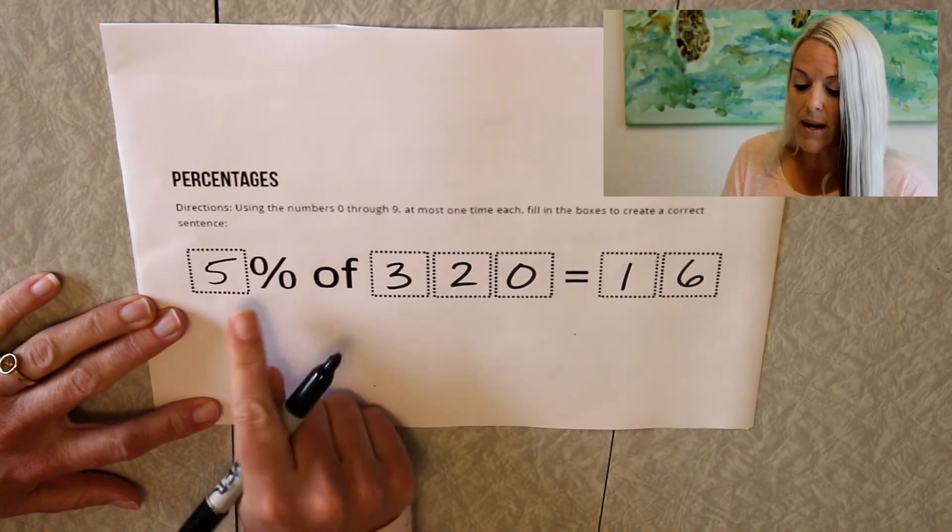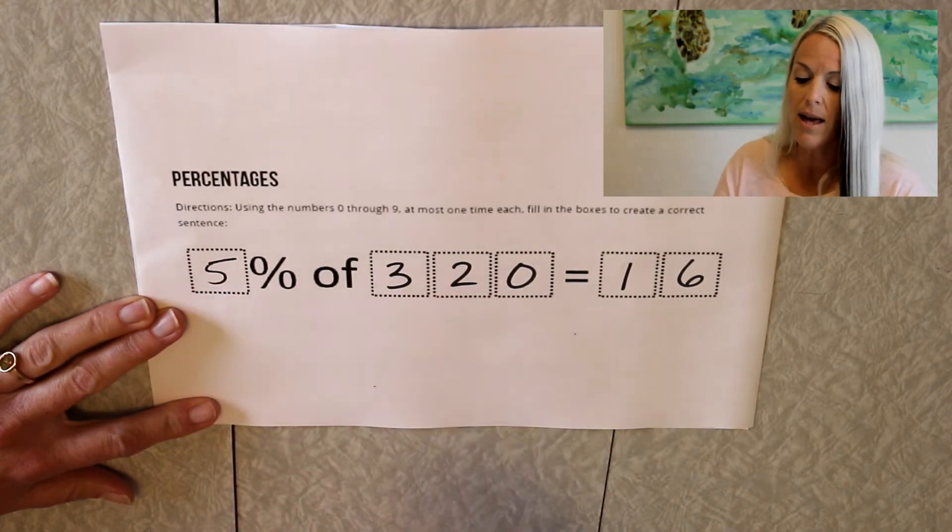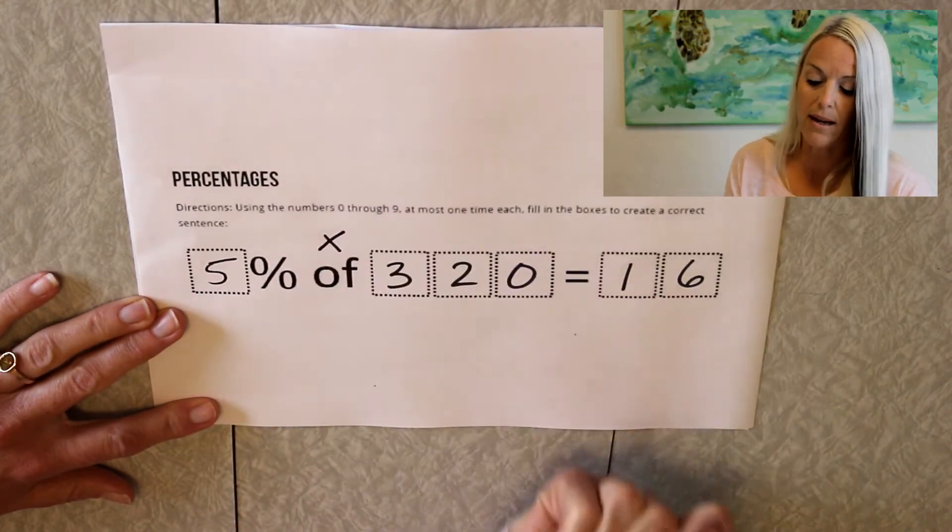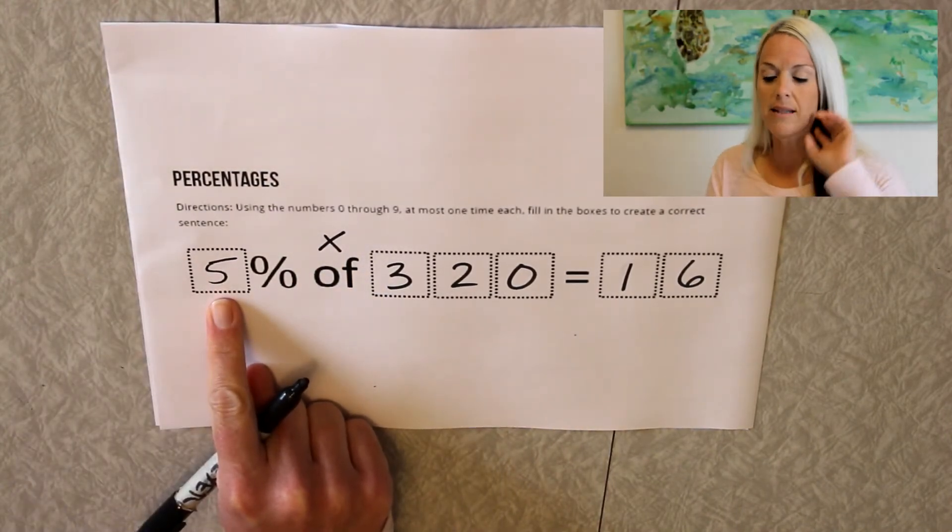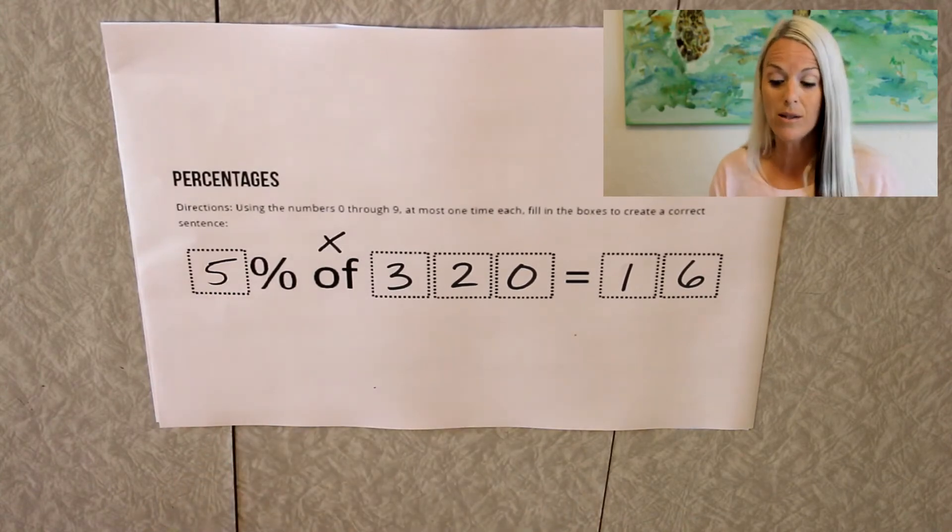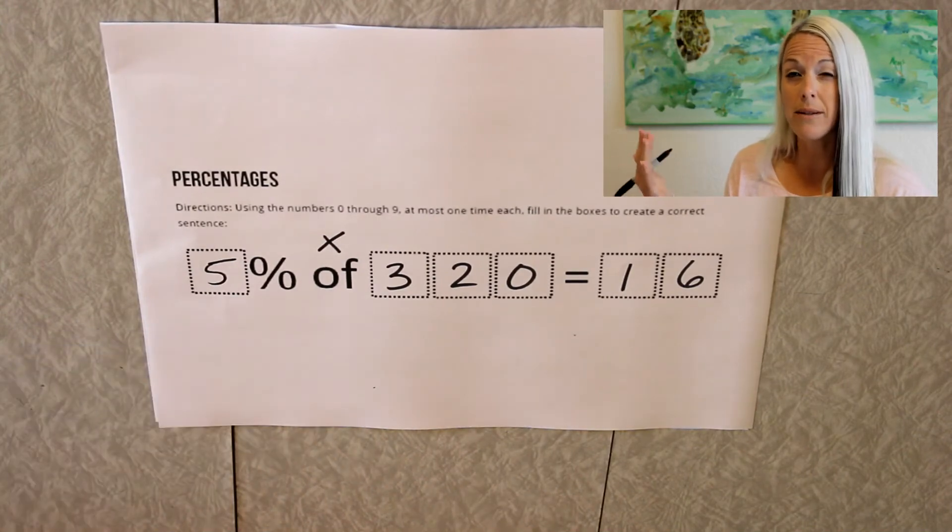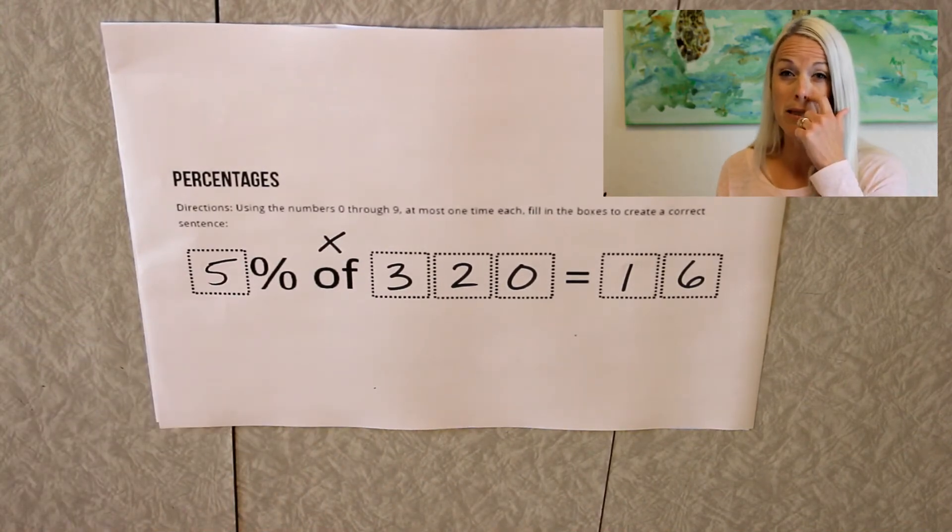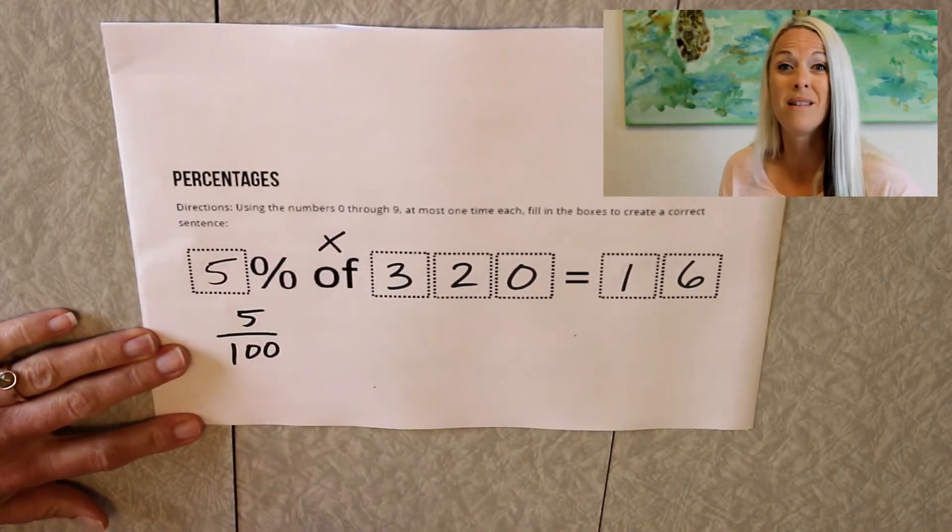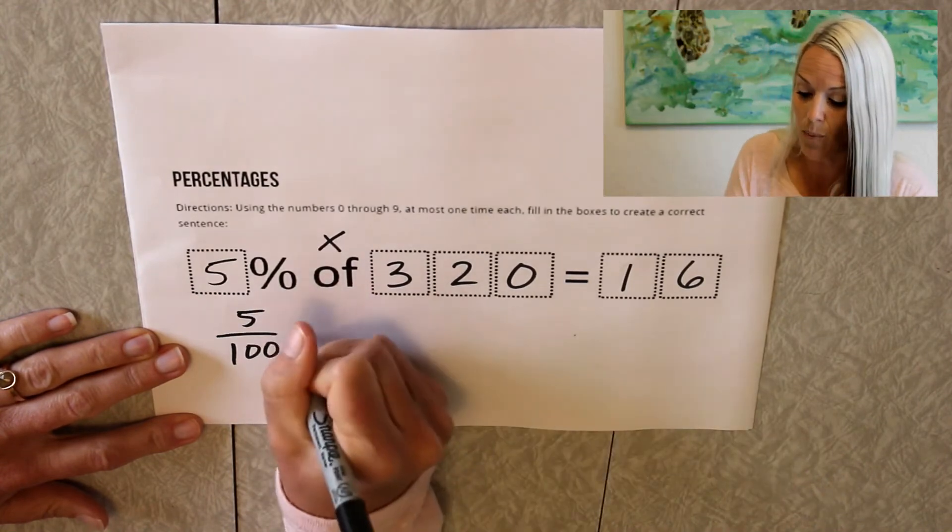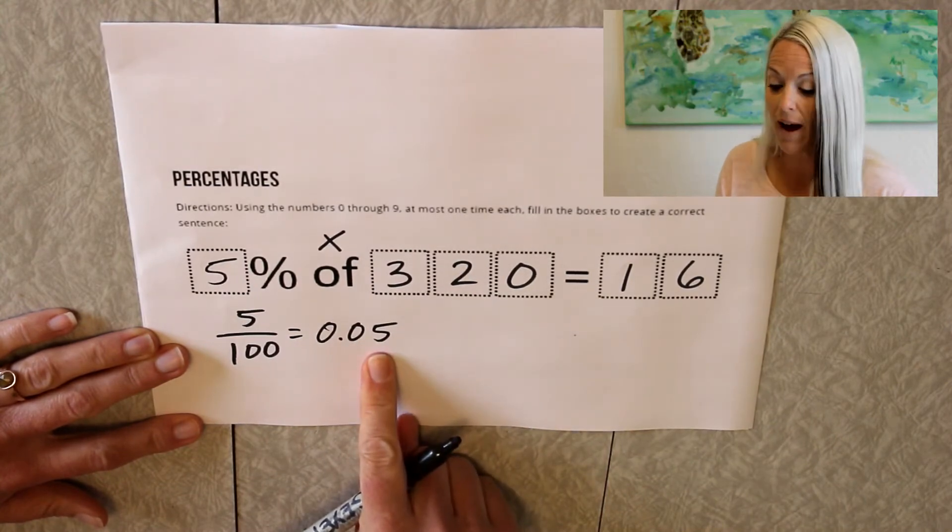So remember when we are finding the percent of a number, that means we are multiplying. Of in math means to multiply. But we can't just multiply that number as it is, as the percent. We need to change it into its decimal form. And remember, percent means over 100. So there's a couple different ways of thinking about how to change it to its decimal form. But right here, if we put 5 over 100, we know that means 5 hundredths.